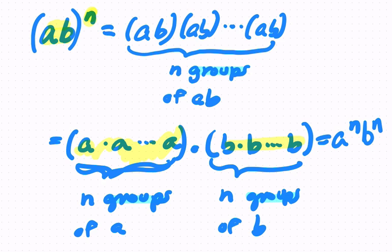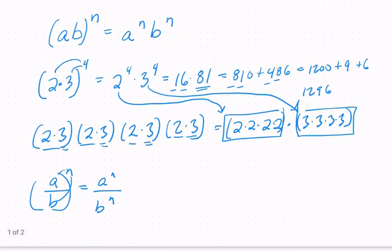We're showing there that a times b to the n is this right here. And again, it just goes right back to this example. n is four. So we have four groups of 2 times 3, which means we have four factors of 2 and four factors of 3. And that's what we have here. Alright, hope this helps.